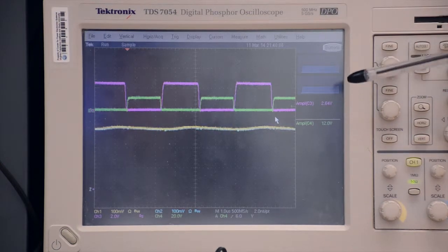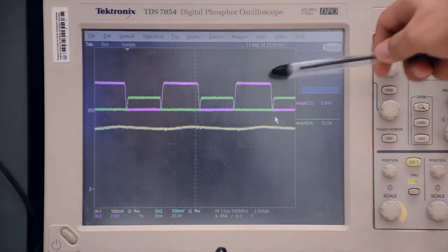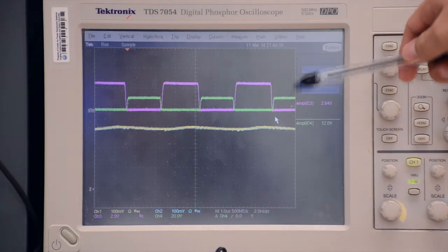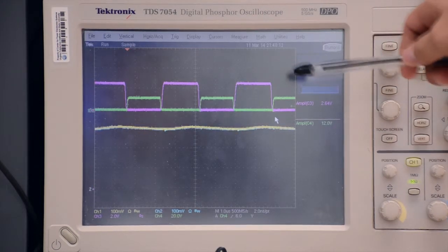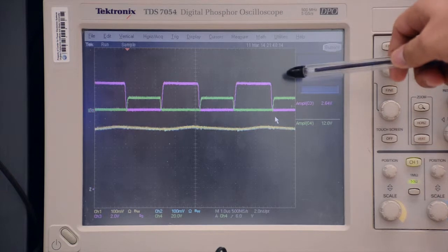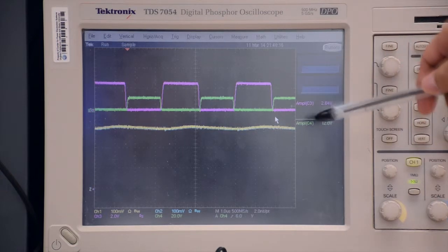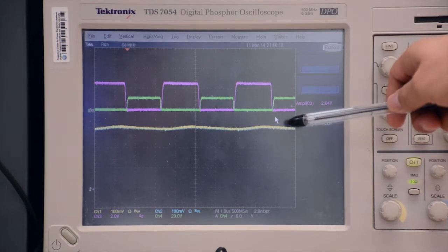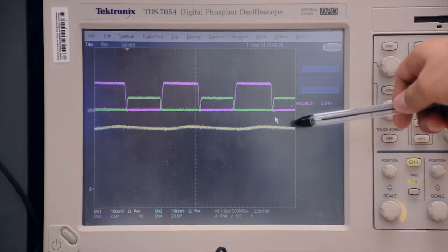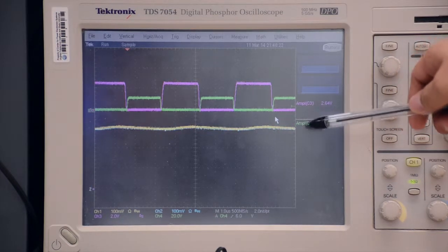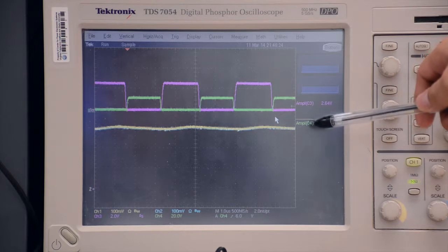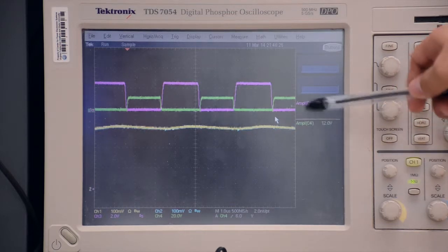Here are the waveforms. The green one is the gate driver of Q2. The purple one is the drain-source voltage of Q2. We can see that ZVS of Q2 is achieved. The yellow one is the current of the first string, and the blue one is the current of the last string. We can see that they are almost the same.